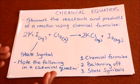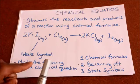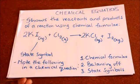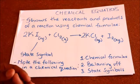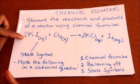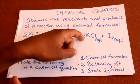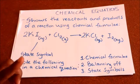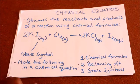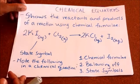Note the following in a chemical equation: we use chemical formulas, the equation has to be balanced — that's why there are coefficients placed on both sides — and after balancing, make sure that your chemical equation has state symbols.